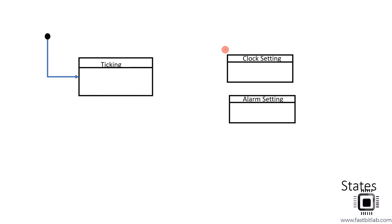The user can also do a clock setting, so we can introduce one more state called clock setting. And the user can also do alarm setting, so we can introduce one more state called alarm setting. You can imagine such states or write them down on paper before modeling through the software.